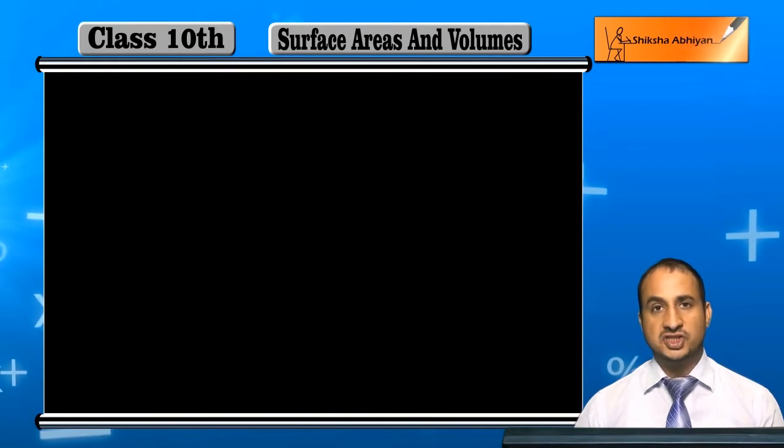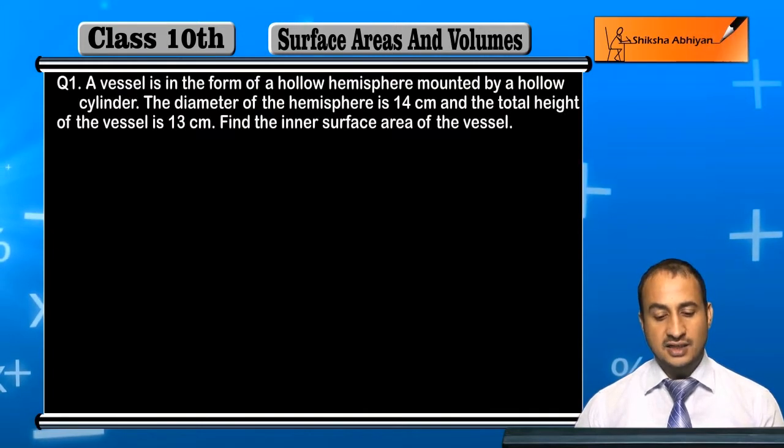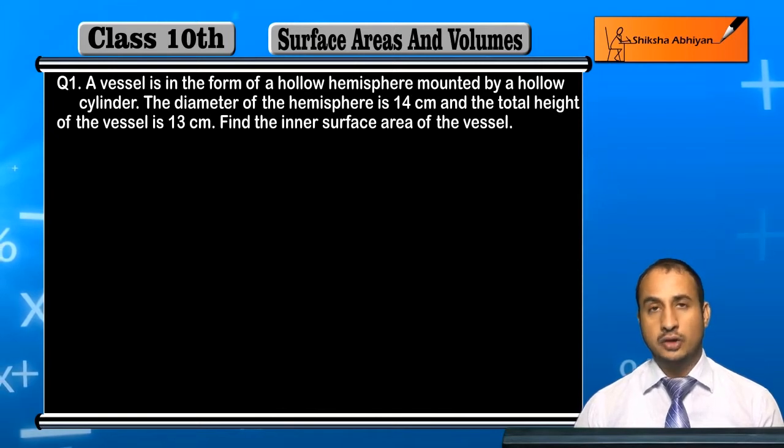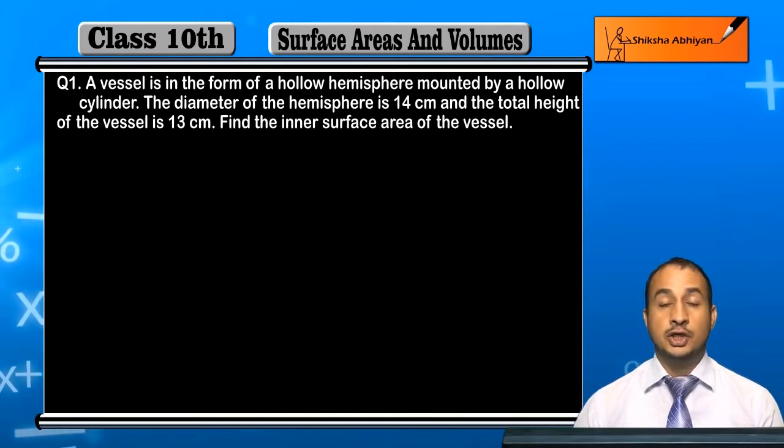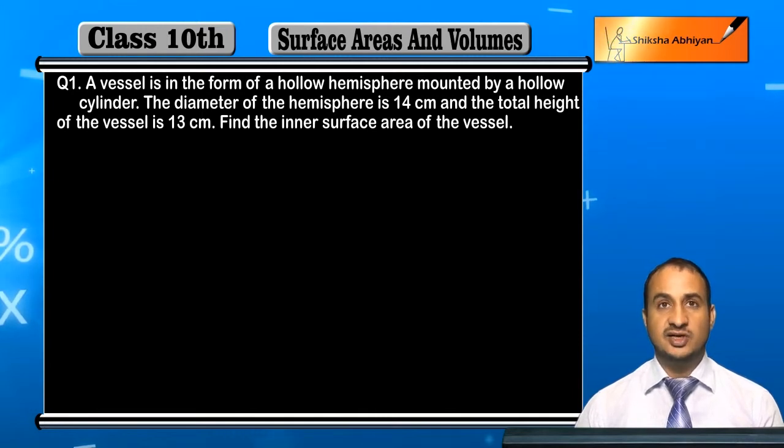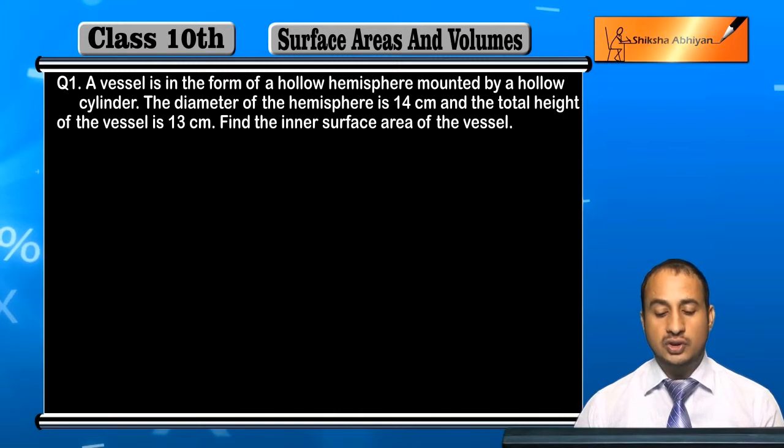The first question is: A vessel is in form of a hollow hemisphere mounted by a hollow cylinder. The diameter of the hemisphere is 14 cm and the total height of the vessel is 13 cm. Find the inner surface area of the vessel.